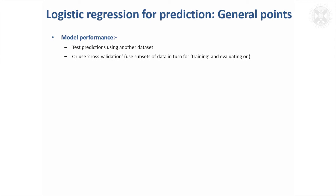A few general points about logistic regression, particularly if you fit a lot of variables — if you were to use all the variables in your model, you might get quite good predictions on your data set, but would it predict well on another data set? If it's important to know that you're going to predict well in the future,